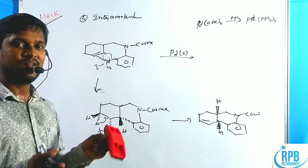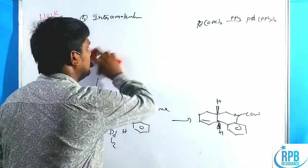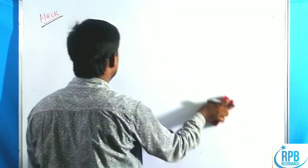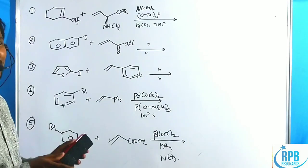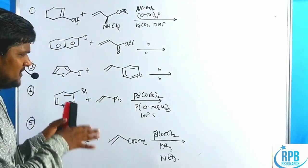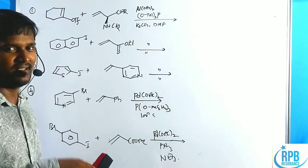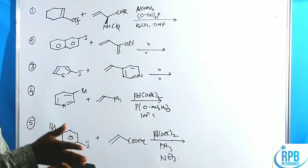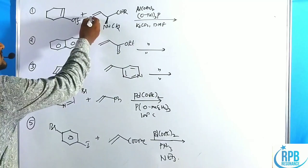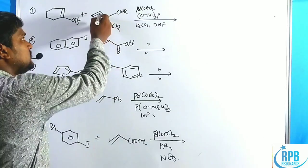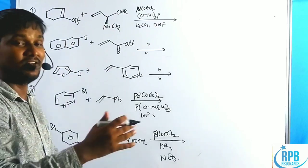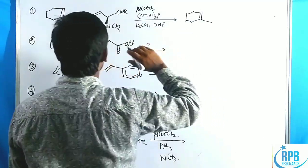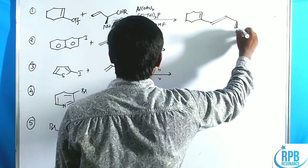Now let us start the problem-solving session for the Heck cross-coupling reaction. These are very important problems — approximately 15–16 problems. Organohalo or triflate compounds both give the Heck cross-coupling reaction. The terminal olefin position is preferred; it gives the major product at the terminal carbon and forms the new C-C single bond at that position.